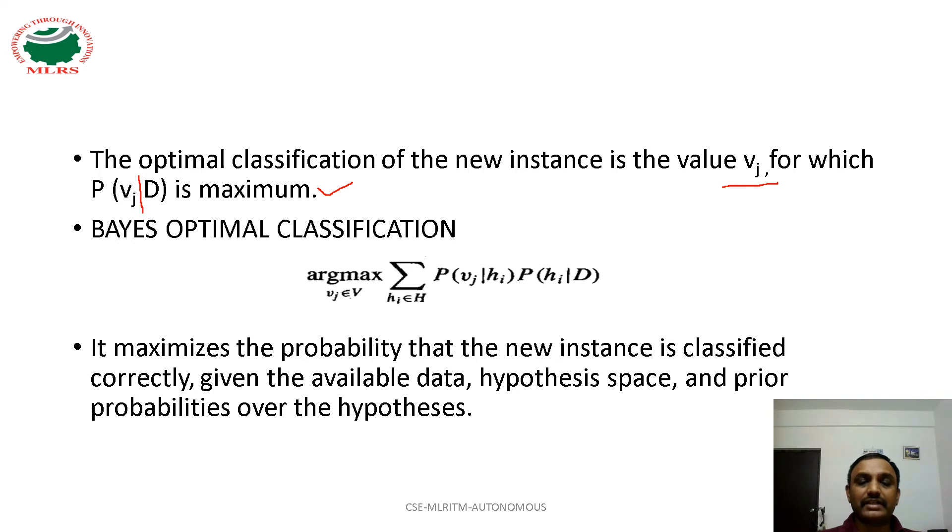Argmax of Vj belongs to V, where V is all possible output values set. The product of these things we are considering and we are taking the argmax of that one.